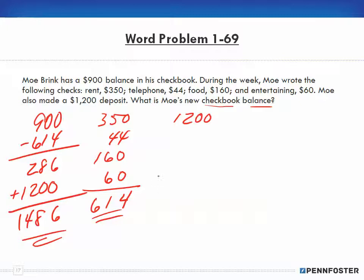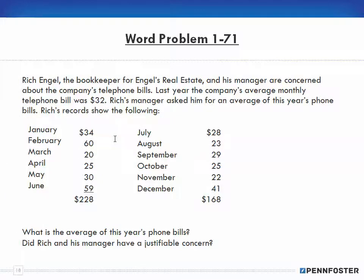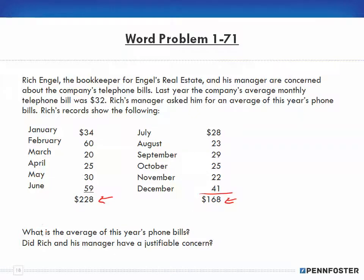Let's move on to Problem 1-71. Rich Engel, the bookkeeper for Engel's Real Estate, and his manager are concerned about the company's telephone bills. Last year the average monthly telephone bill was $32. Rich's records show January through June totaled $228, and July through December totaled $168. I can add those together and divide by 12 to get the monthly average.